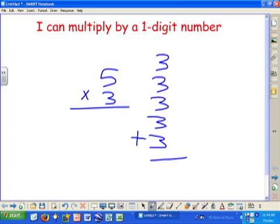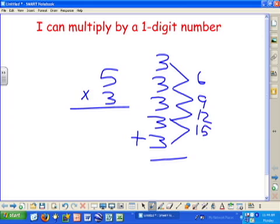Add those all together. 3 plus 3 is 6, plus 3 is 9, plus 3 is 12, 12 plus 3 is 15.